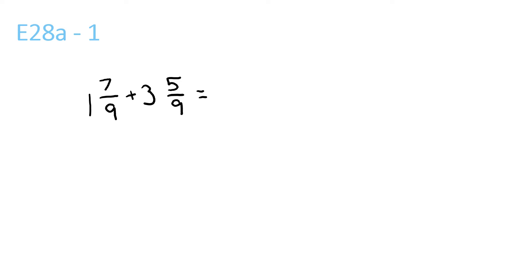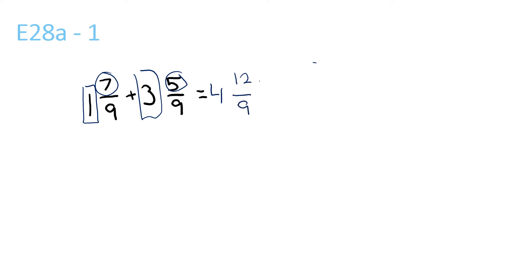For this question, we have the front numbers 1 and 3, that would be 4. And then we have 7 and 5, 12. And then we bring the 9 over — 4 and 12 over 9. Once we've got that, put it on the side here: 4, it would be 12 over 9, which is here, plus 4. Since that's an improper fraction, we have to convert it to a mixed one.